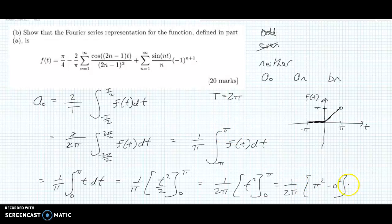So I get 1 over 2π times π squared minus 0 squared, so that becomes π squared over 2π. One of the π's on top will cancel with the π below, and we're left with π over 2. So A0 equals π over 2, and that's an important little building block for later in this question.